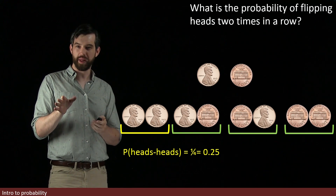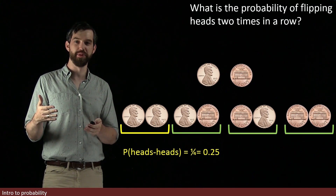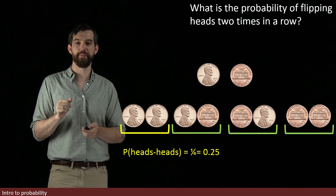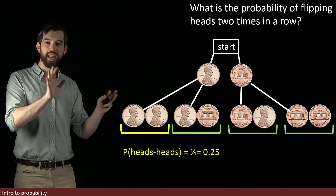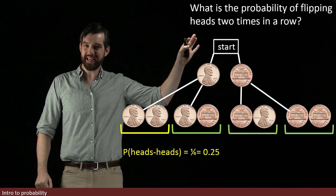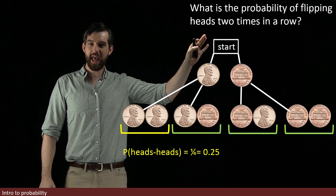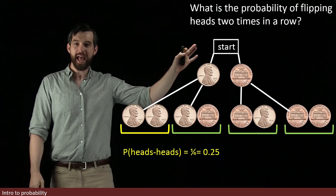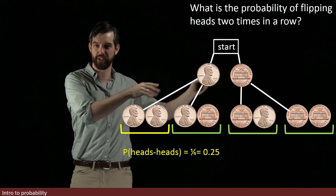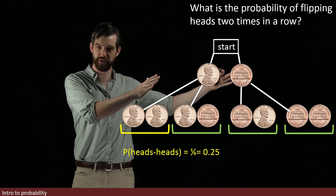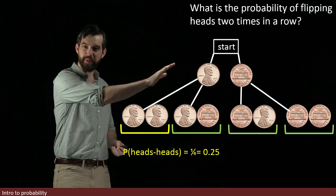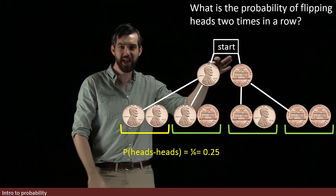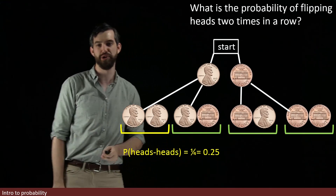As these examples get more complicated, we want a systematic way to list all the different possibilities, and we do that using something called a tree diagram. I'm going to overlay white lines on the pennies connecting the possibilities. After the start, it diverges into two cases — the first flip is heads or tails. If it's heads, that diverges into two more possibilities; if it's tails, that also diverges into two possibilities.